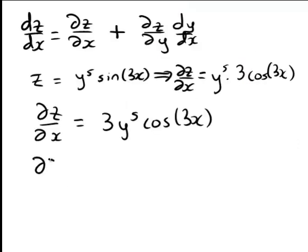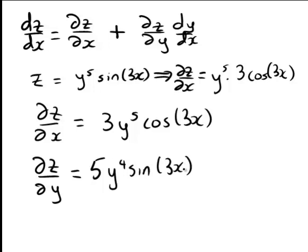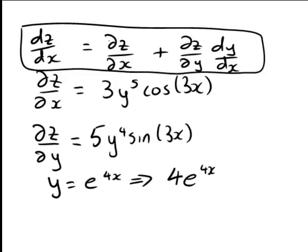Similarly, to work out the partial derivative of z with respect to y, x is now treated as a constant. And we're differentiating with respect to y, so y to the 5 sine 3x becomes 5y to the 4 times sine 3x. Now, we're also told that y equals e to the power of 4x, and that means that dy/dx, just differentiating that with respect to x, gives 4e to the 4x.